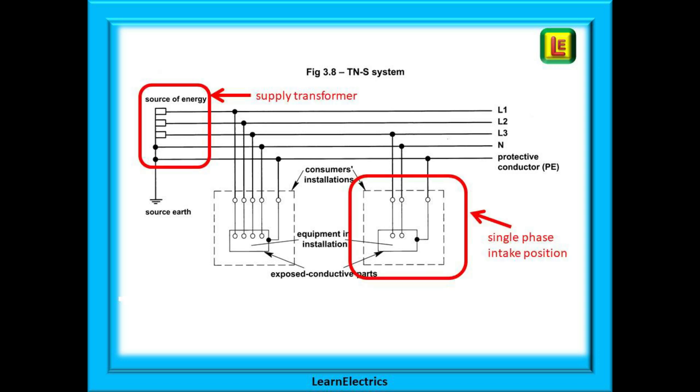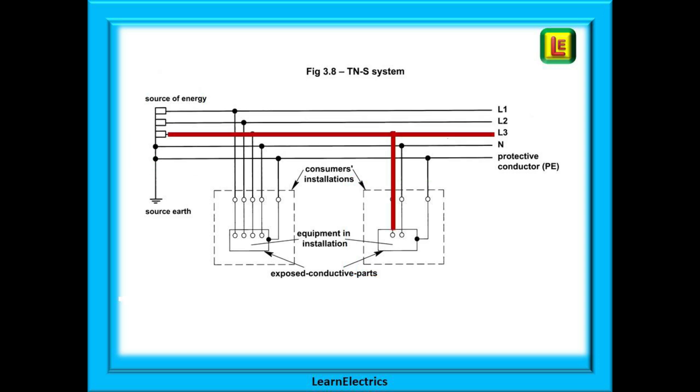Top left in the red box is the supply transformer. This is showing the three phases plus the neutral plus the earth. And at the bottom right we are boxed around a single phase intake position. To the left is a three phase intake position. And how is the wiring arranged for this single phase installation. We have used a brown wire here to mark the phase conductor. And blue for the neutral. With the green wire representing the earth conductor. This is a TNS system. So the earth and the neutral are separate throughout.